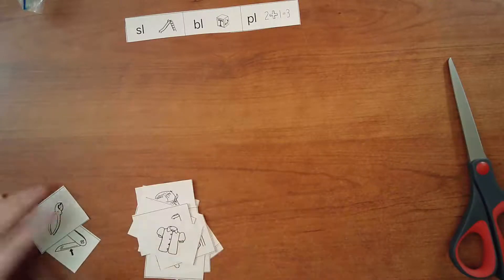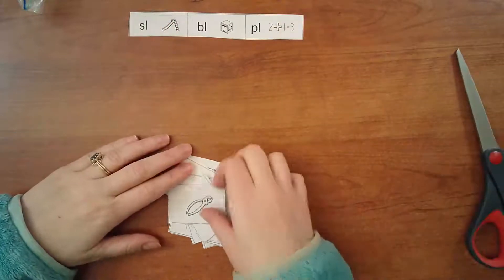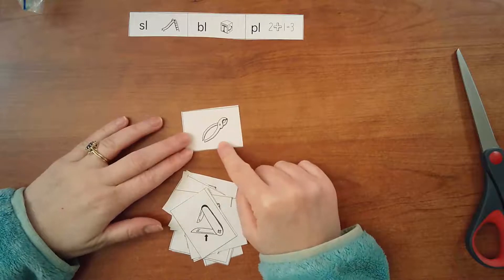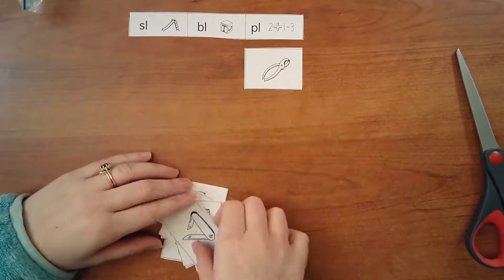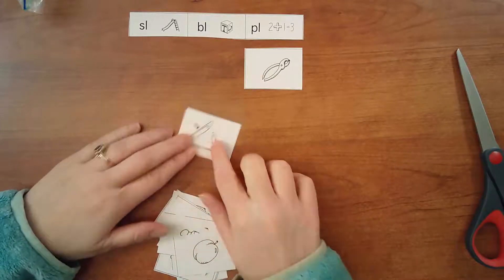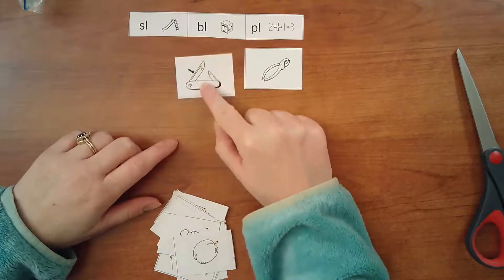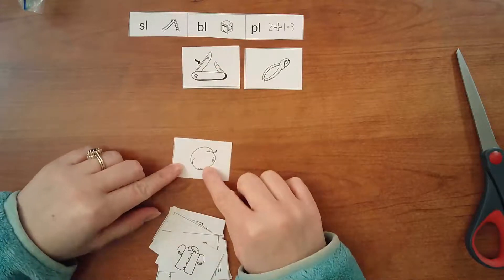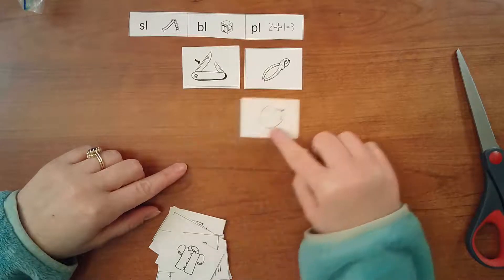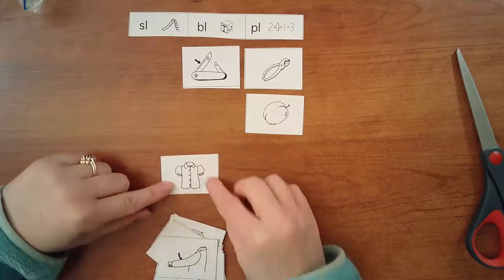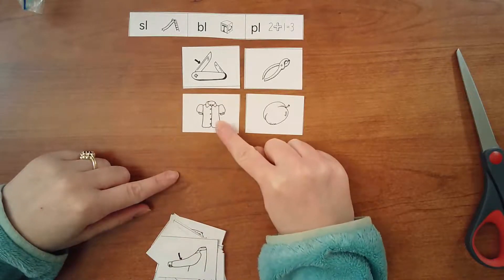Okay, so I'm going to do a few of these with you and then you'll do the rest on your own. So remember what these were? Pliers. Pliers. Where do they go? Pull. Blade. Blade. Blade. Right there. Plum. Plum. Plum. I'll do one more for you. Blouse. Blouse. Blouse.